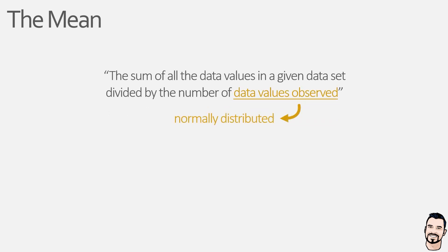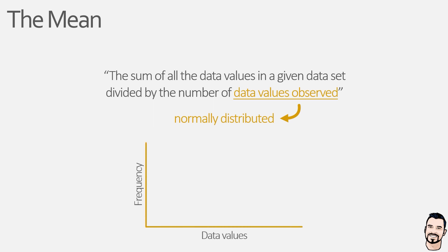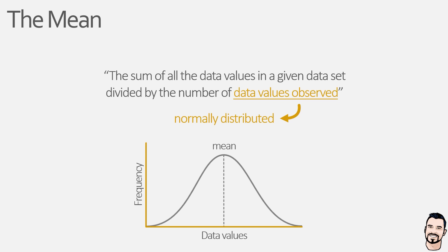So what do we mean by this? Well, put very simply, data that is normally distributed will be symmetrical around the mean, and when visualised on a graph it takes the form of what we call a bell-shaped curve. What this means is that data values closer to the mean will occur more frequently than data values which deviate further from the mean.